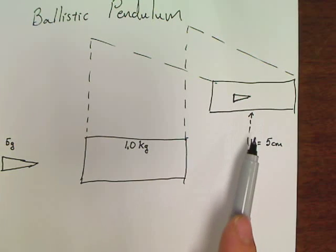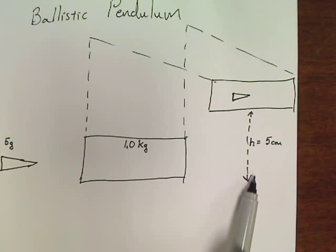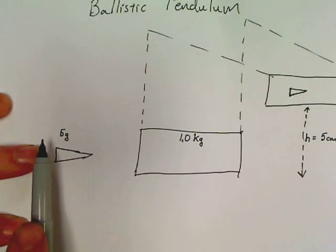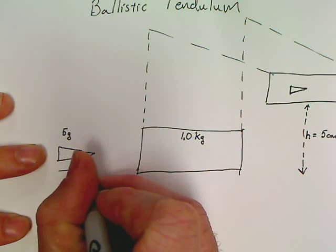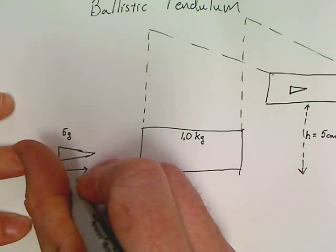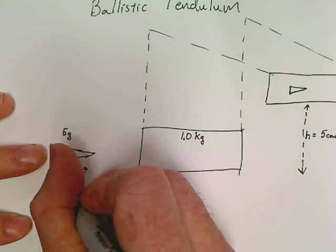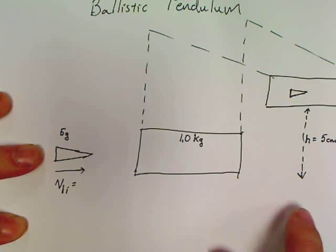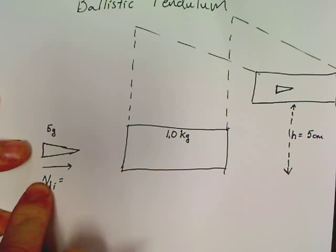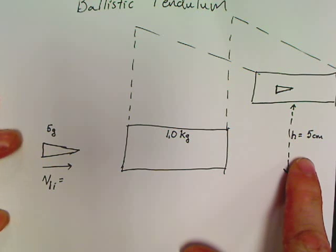But usually it's going to either give you the height and then ask you how fast this bullet is traveling, and I'm going to call that V1 initial, or it's going to actually give you this velocity initial and ask you for this height.